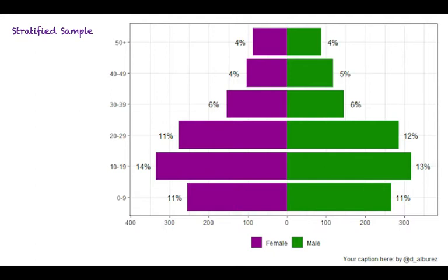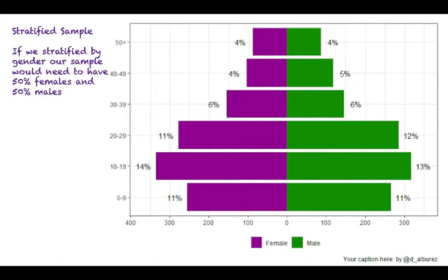In this population we could stratify by gender. Our sample would need to have 50% females and 50% males. We could stratify by age. Our sample would need 22% of 0 to 9 year olds. 27% of 10 to 19 year olds.